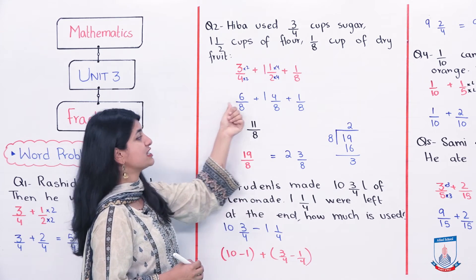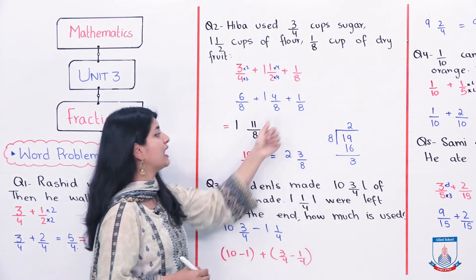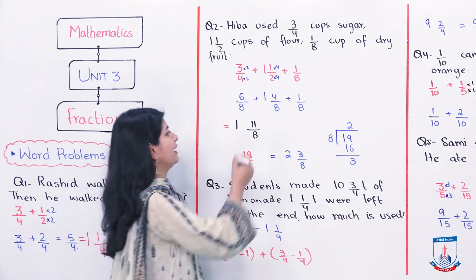So, if you add them, 6 plus 4, 10, 10 plus 1, 11, 11 over 8. This is the 1 as it is.